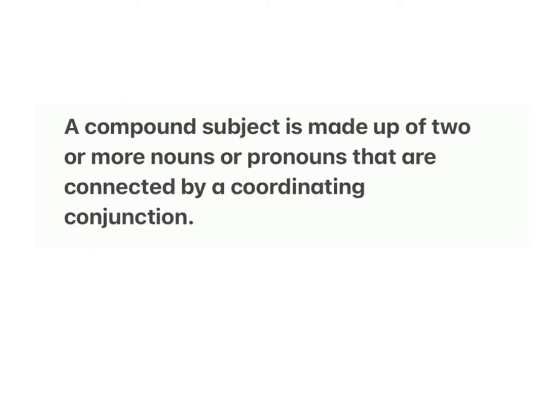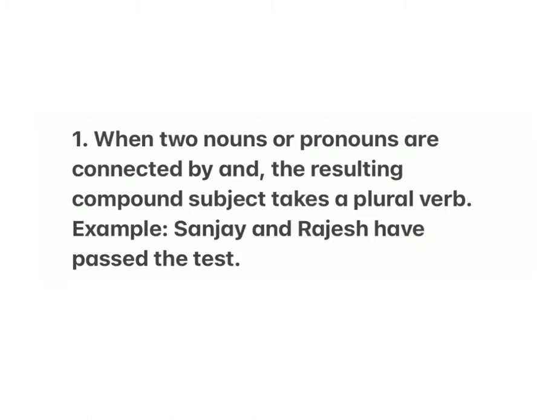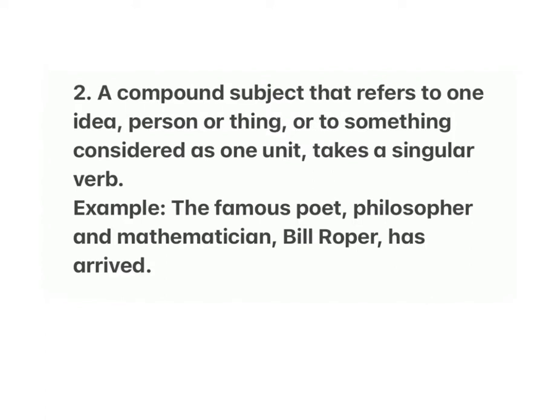A compound subject is made up of two or more nouns or pronouns connected by a coordinating conjunction. Rule 1: When two nouns or pronouns are connected by 'and', the resulting compound subject takes a plural verb. Example: Sanjay and Rajesh have passed the test. Rule 2: A compound subject that refers to one idea, person, or thing, or something considered as one unit, takes a singular verb.